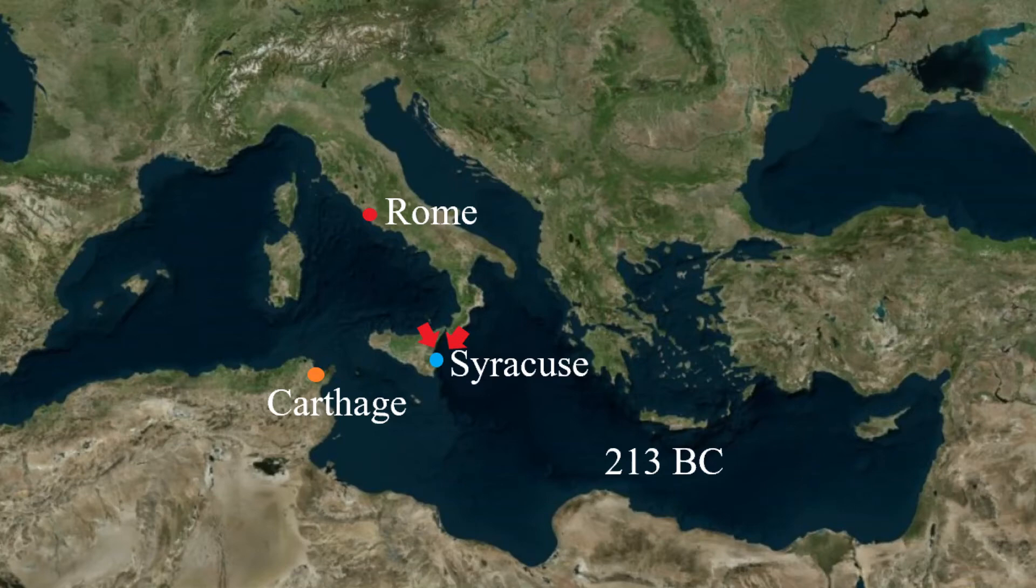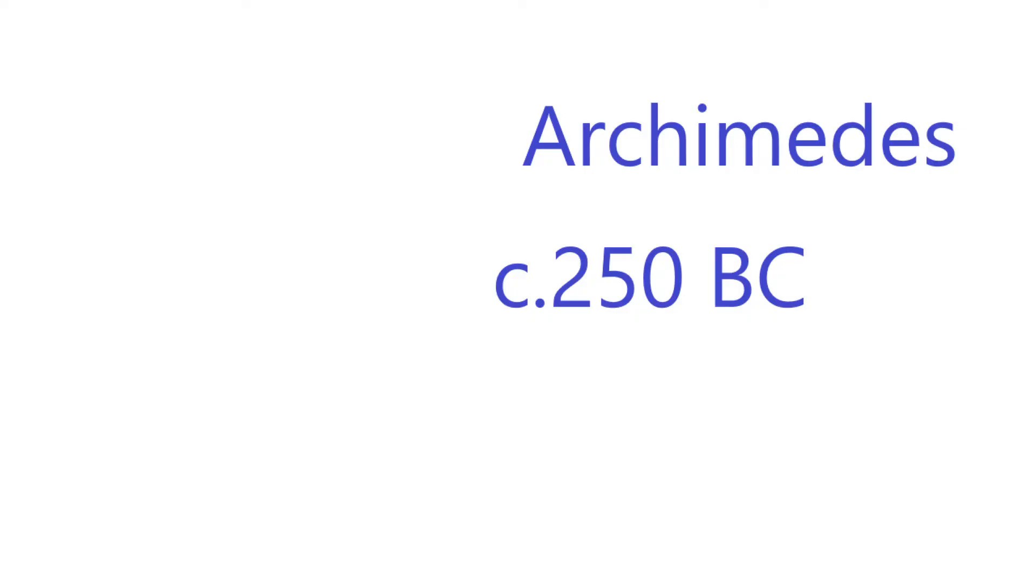His last words, apparently, as Romans entered his home and approached his work bench, was do not disturb my circles. Amazingly, around 250 BC, Archimedes was able to deduce pi from being about three to an exact 223 divided by 71, or 22 divided by seven, both of which are amazingly 3.14.